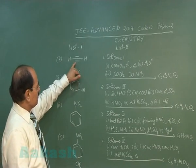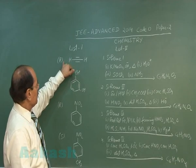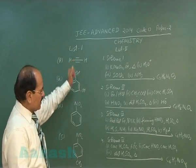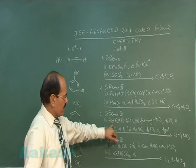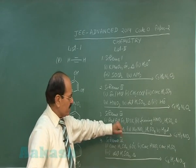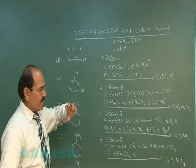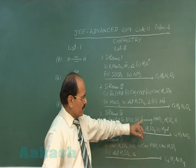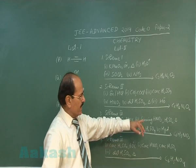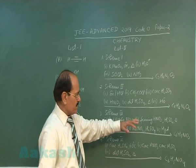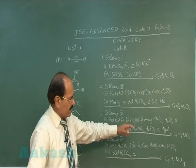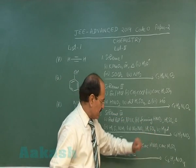The compound given in option P is ethyne. Ethyne, when passed over red hot iron at 873 Kelvin, undergoes cyclic trimerization forming benzene. Benzene on treatment with fuming nitric acid and sulfuric acid forms nitrobenzene. Nitrobenzene is further nitrated to get meta-dinitrobenzene.